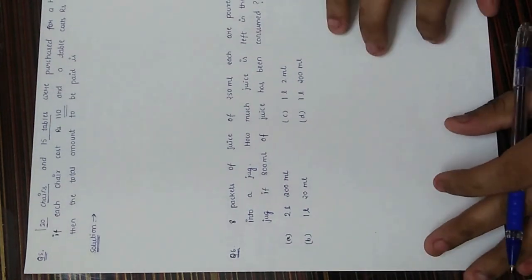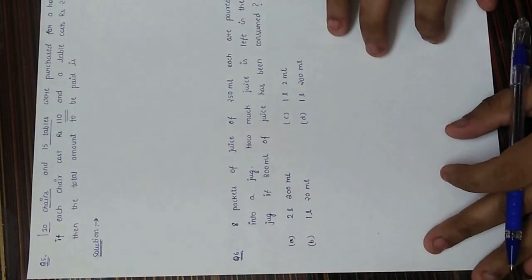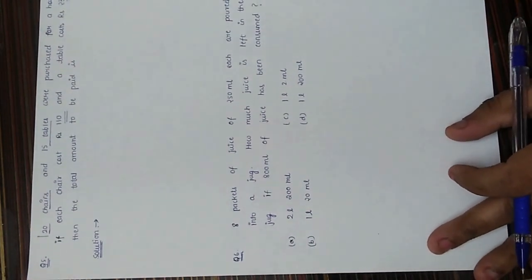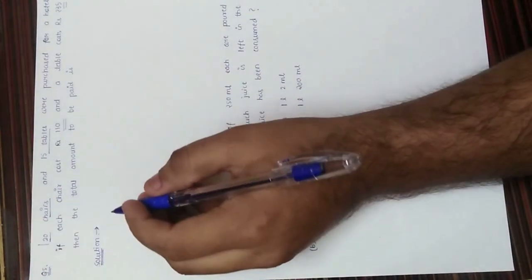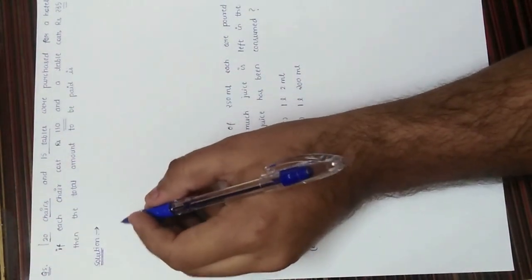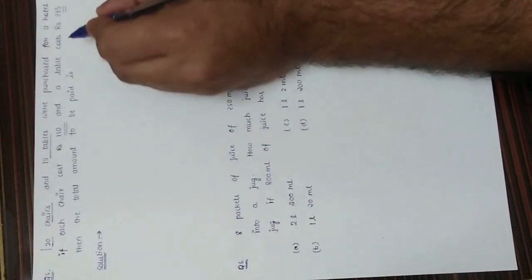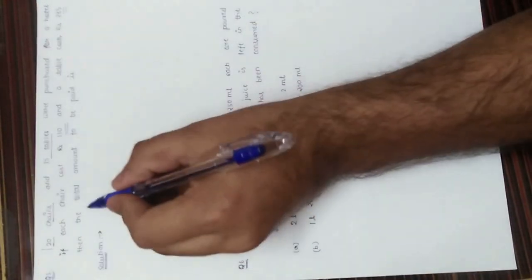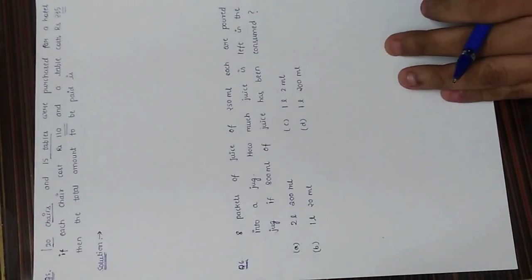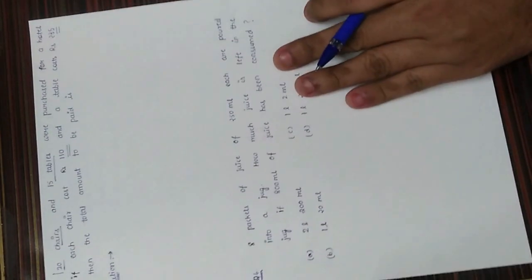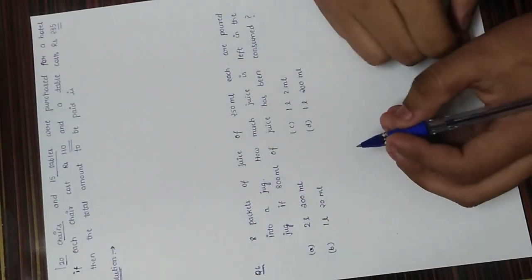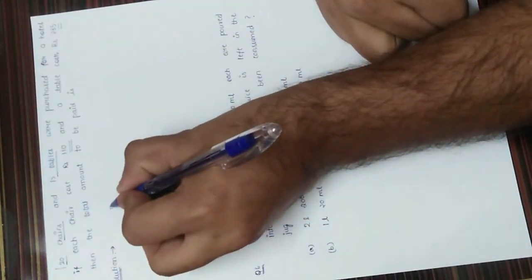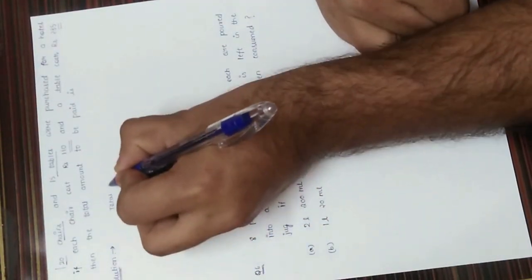Question number five: 20 chairs and 15 tables were purchased for a hotel. If each chair costs 110 and a table costs 235, what is the total amount to be paid? We need to calculate the total amount.